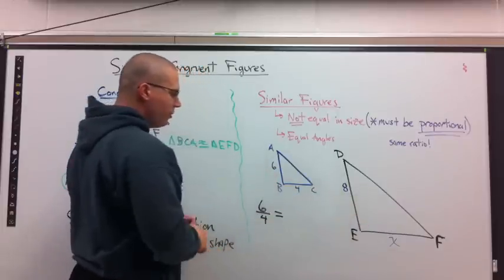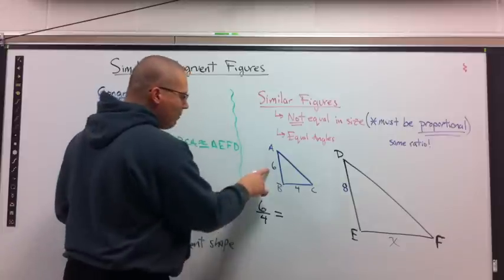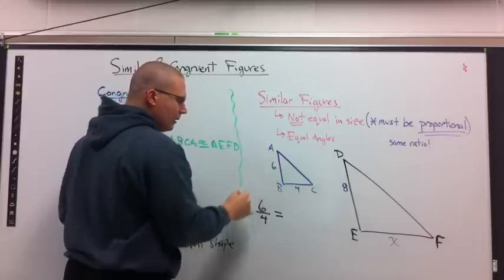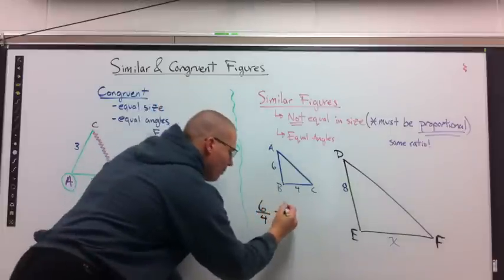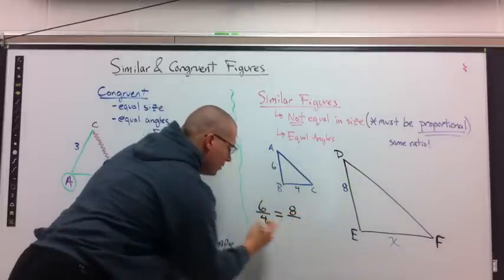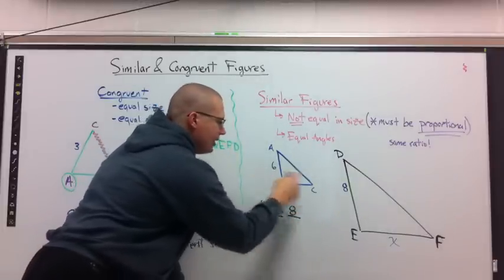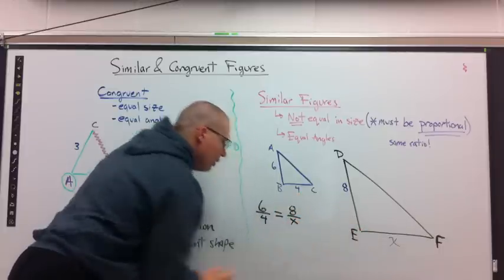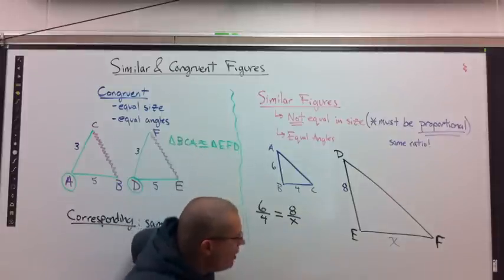So, in my head, my label is side, left side. 6 is to 8. Match it up with the corresponding piece. 6 is to 8. 6 is to 8 as 4 is to X. 4 is to X. Now that I have my proportion written, I go through my proportion to solve.